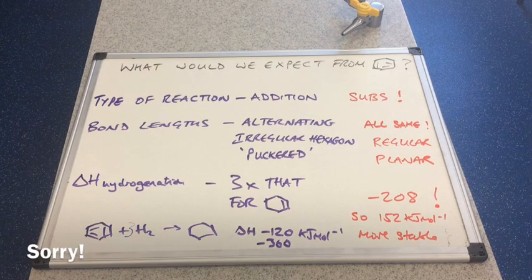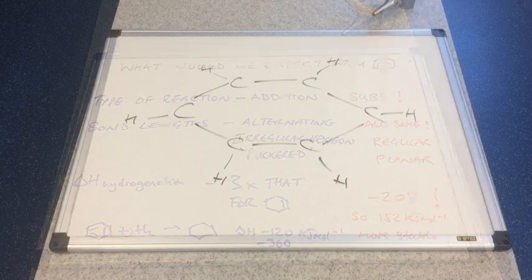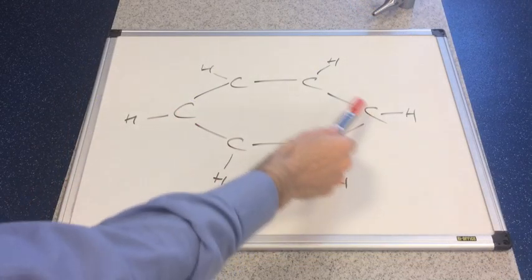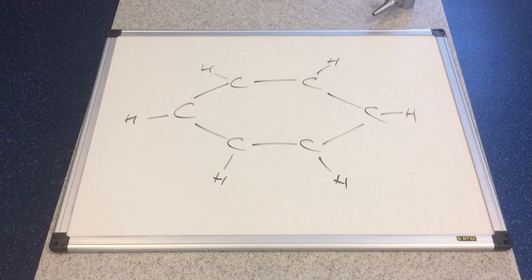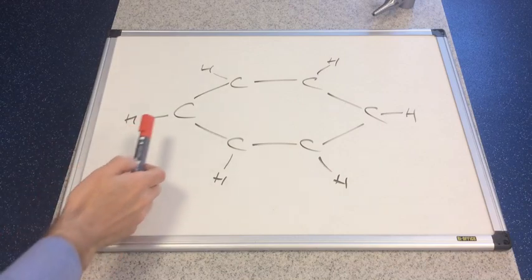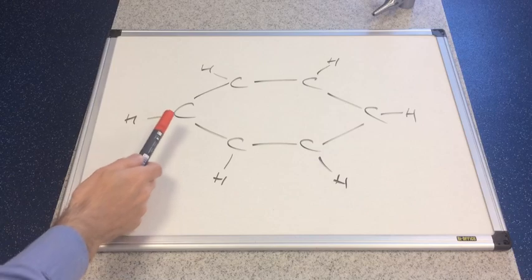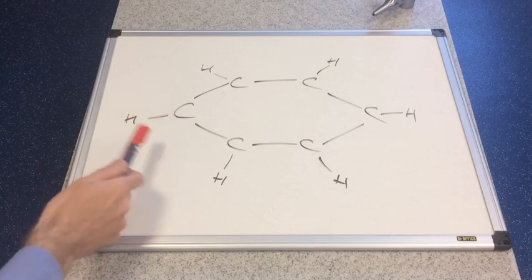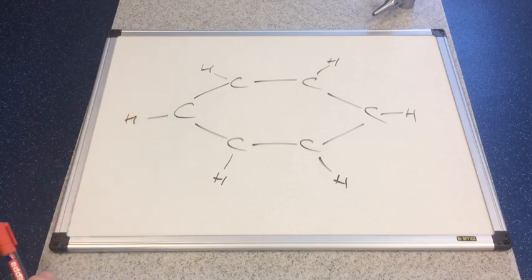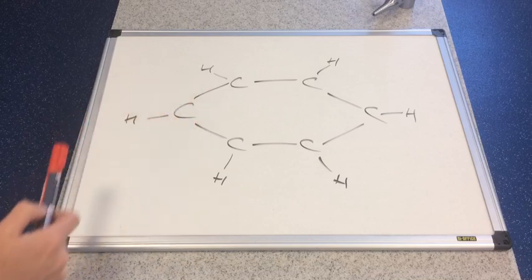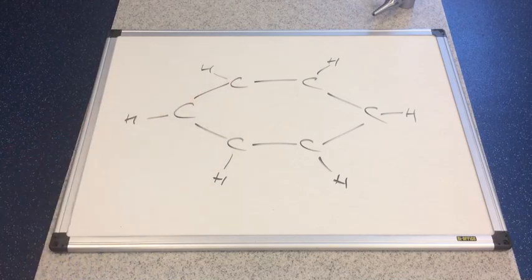I've drawn up on the board those six carbons in this hexagonal ring shape. What we're going to look at first is each carbon uses three of its four outer electrons. Remember carbon has four outer electrons. It uses three of them, one, two, three, to make three sigma bonds.